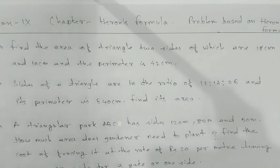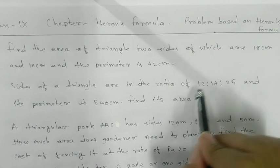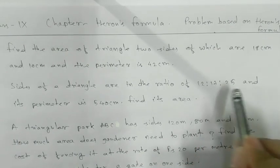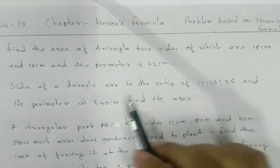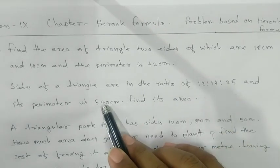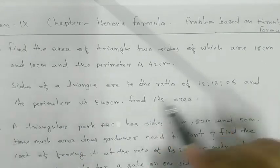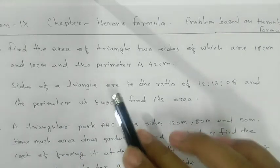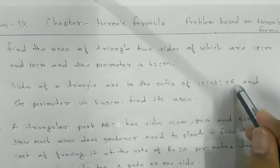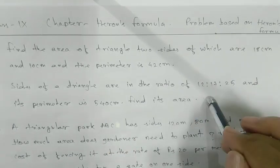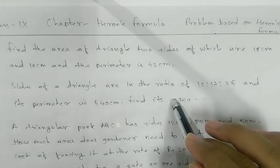Second one. So how we are going to find? Use let 12x, 17x and 25x and sum of these will give you 540. Why sir? Because perimeter. After that we will get the value of x, we will substitute the value of x in 12x, 17x and 25x, we will get respective sides. And then we will use Heron's formula and we will find area of triangle.